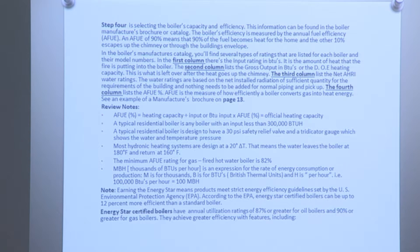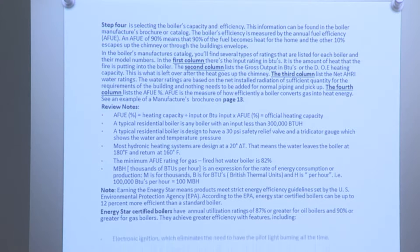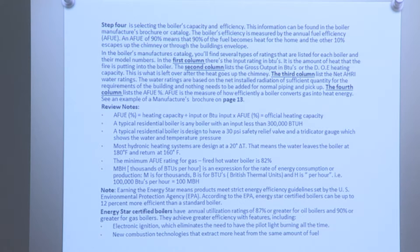Earning the Energy Star means products meet strict energy efficiency guidelines set by the U.S. Environmental Protection Agency. According to the EPA, Energy Star certified boilers can be up to 12% more efficient than a standard boiler. Energy Star certified boilers have an AFUE rating of 87% or greater for oil boilers, or 90% or greater for gas boilers. They achieve greater efficiency through features including electronic ignition — eliminating the need for a pilot light — new combustion technologies that extract more heat from the same amount of fuel, and sealed combustion that uses outside air to fuel the burner, reducing drafts and improving safety.